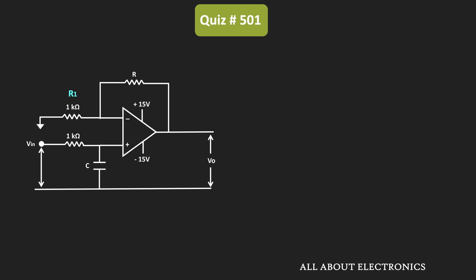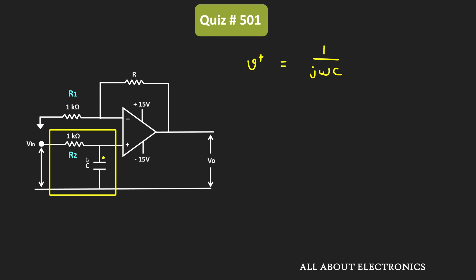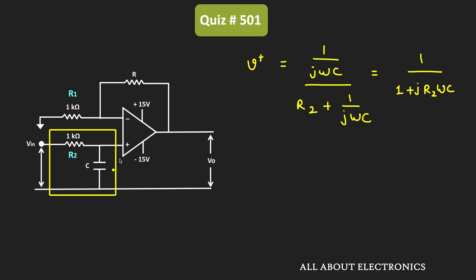Let's say this resistor is equal to R1, while this other resistor is equal to R2. If you see this circuit, it is nothing but a low-pass filter. This low-pass filter is connected to the non-inverting terminal of the op-amp. The voltage at this non-inverting terminal V+ can be given as (1/jωC) divided by (R2 + 1/jωC), which equals 1 divided by (1 + j·R2·ω·C).